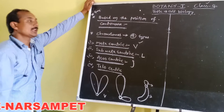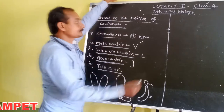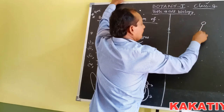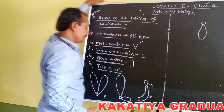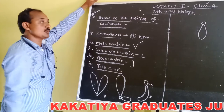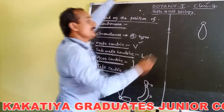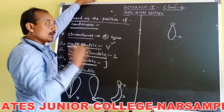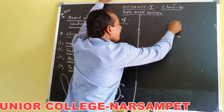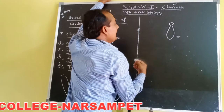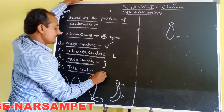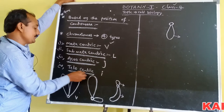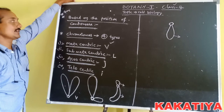The last type is telocentric chromosomes. In these chromosomes, it consists of a single chromatid and the centromere is located at one end of the chromatid. During anaphase, these chromosomes appear I-shaped. Such chromosomes are called telocentric chromosomes.